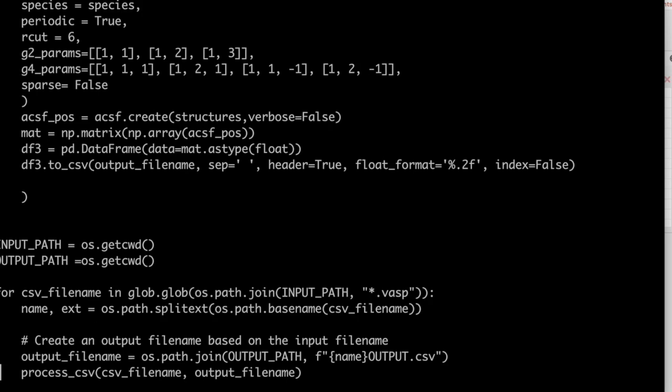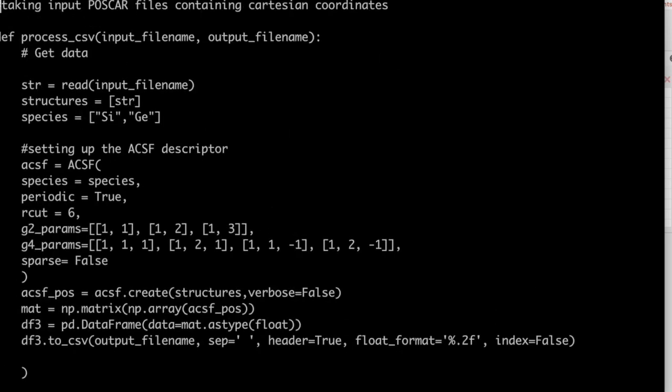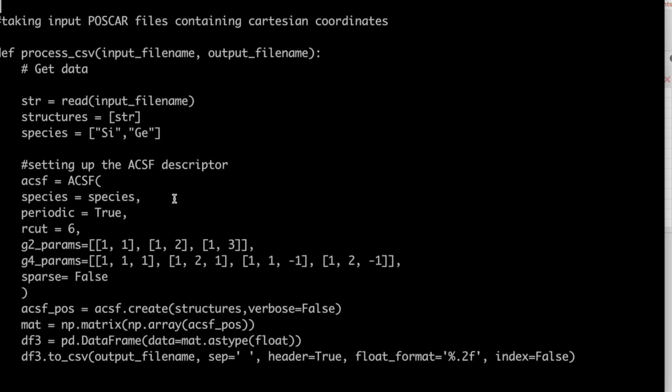Inside the function, str reads the input file in POSCAR format with .vasp extension. We must define the species of atoms this POSCAR has. Now we define parameters for ACSF descriptors. These parameters are unique for every atomic system and their choice will determine how accurate are your ACSF descriptors. Significance of each parameter is discussed later.